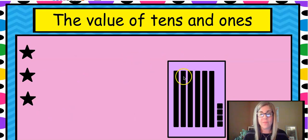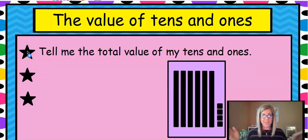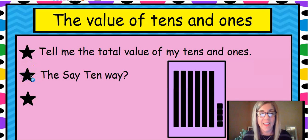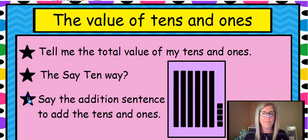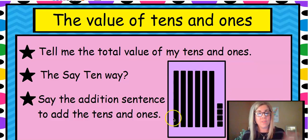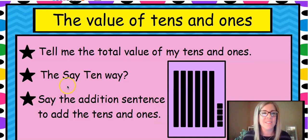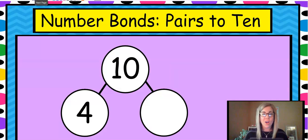So here's another one. Whoa, that's a big one. Do you know what it is? What's the value? That's right. 64. And the say 10 way would be 6 10s, 4. Good job. And the addition sentence would be how much are the 10s? The value is 60 and 4. So 60 plus 4 equals 64. Man, you guys rock this.